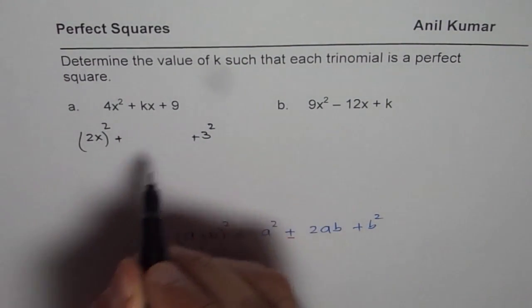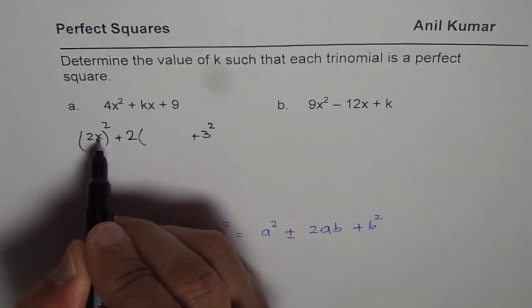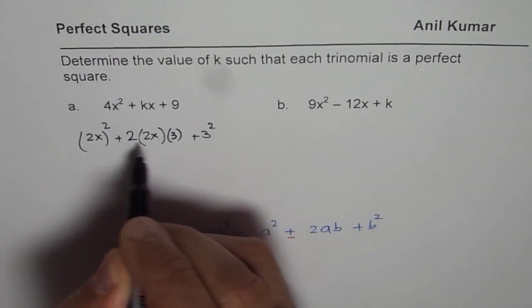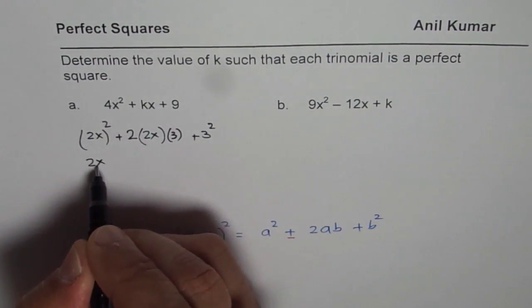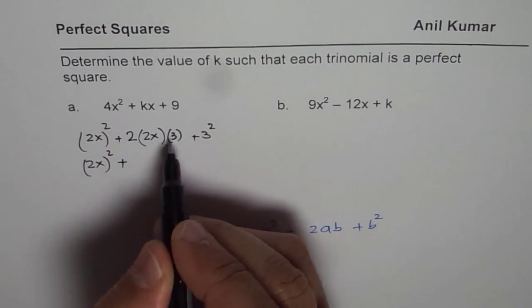The center term is a combination of these two with times 2. So 2 times 2x times 3. So what do you get? You get here (2x)² plus 2 times 2, which is 4. 4 times 3 is 12.